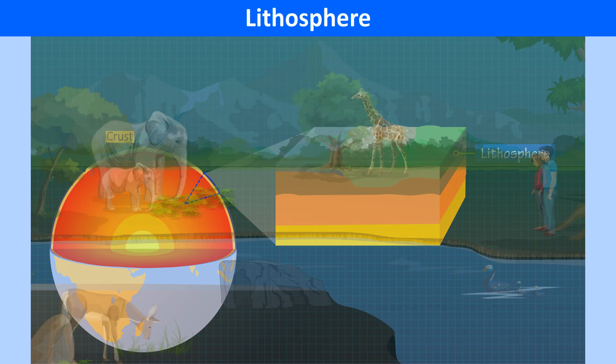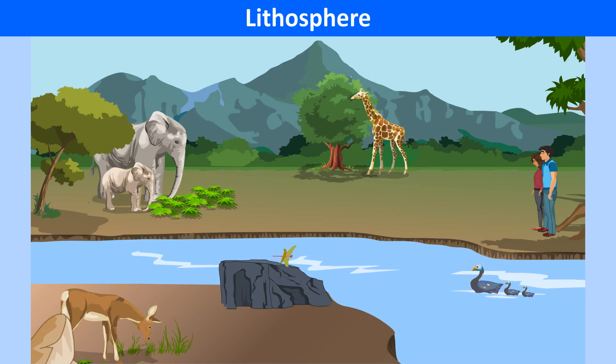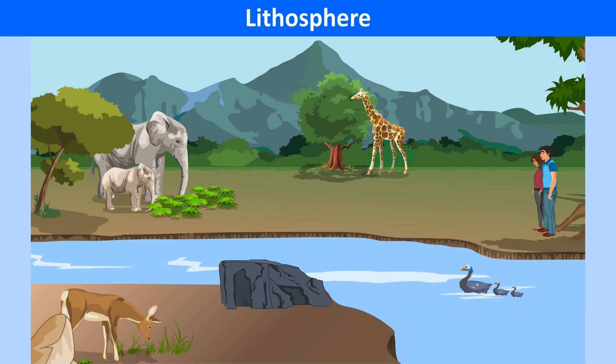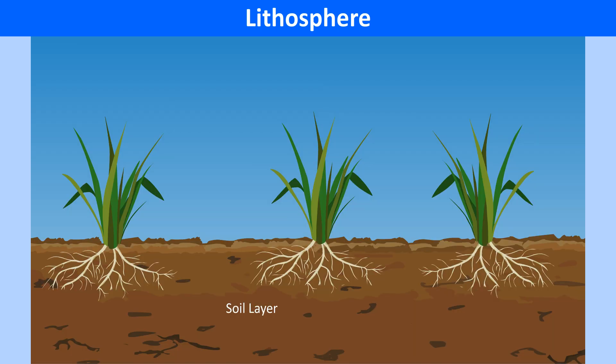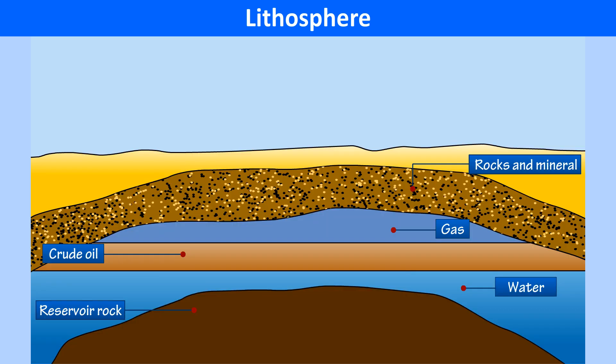We also find life — plants, animals and humans. It has a soil layer that allows plants to grow. Resources like oil, gas and minerals are also found here.